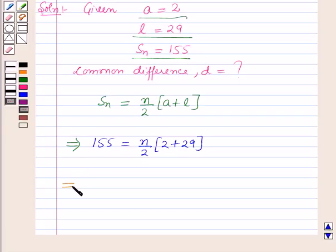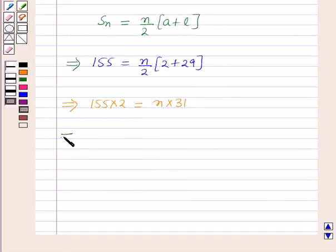This implies 155 times 2 = n times 31, which implies 155 times 2 divided by 31 = n. Now this implies 31 times 5 is 155, and 5 times 2 is 10, so 10 = n.